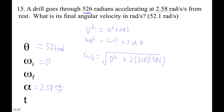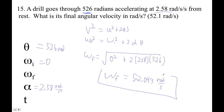The square root of 2 times 2.58 times 526 is 52.097 radians per second, which is about that, right?